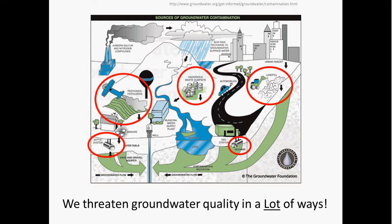Even the chemicals that we put on our lawns, fields, and roads — like road salt — can make their way into aquifers and degrade water quality. These are just a few examples, but they clearly illustrate that there are a lot of threats to our groundwater resources, coming in many forms from many sources.